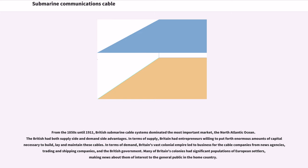From the 1850s until 1911, British submarine cable systems dominated the most important market, the North Atlantic Ocean. The British had both supply-side and demand-side advantages. In terms of supply, Britain had entrepreneurs willing to put forth enormous amounts of capital necessary to build, lay, and maintain these cables. In terms of demand, Britain's vast colonial empire led to business for the cable companies from news agencies, trading and shipping companies, and the British government. Many of Britain's colonies had significant populations of European settlers, making news about them of interest to the general public in the home country.